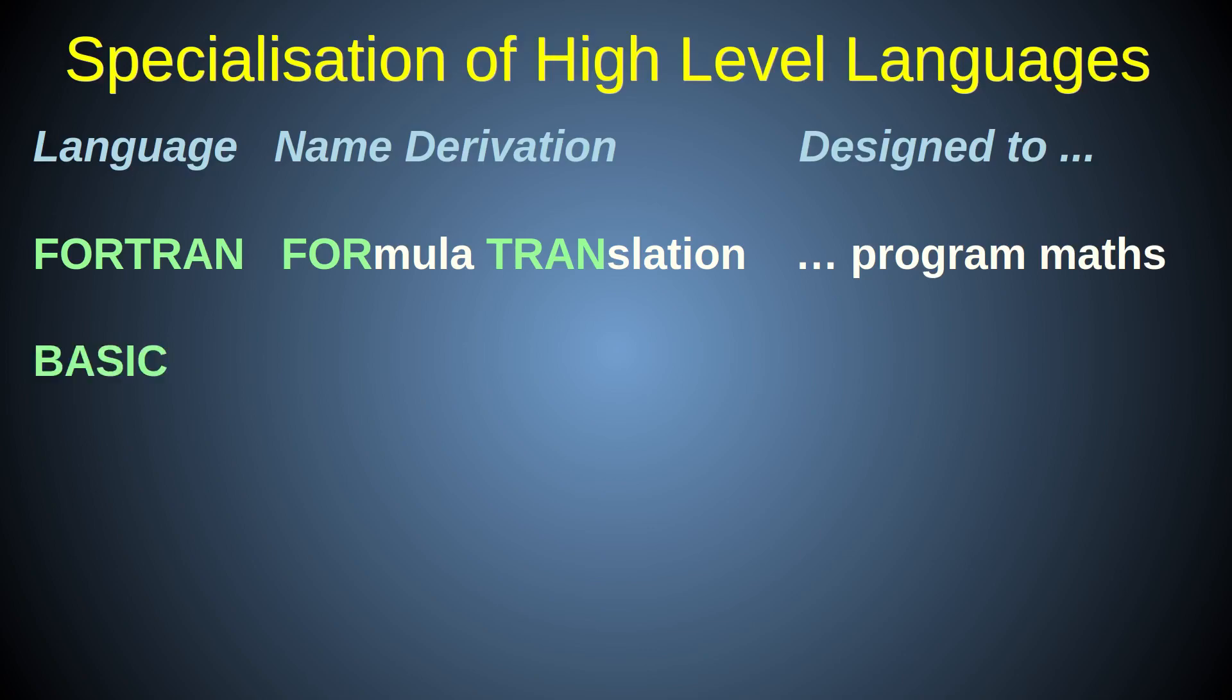On the other hand, BASIC, developed in the 1960s, stands for Beginner's all-purpose symbolic instruction code, and was designed to be an easy introduction to programming for beginners. Ease of use was more important than speed of execution, so BASIC is usually an interpreted language.